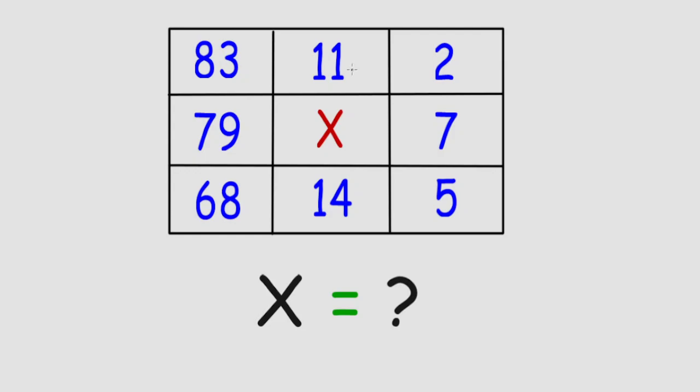But the trick over here is to add each digit. So, 8 plus 3 gives you 11. And 1 plus 1 gives you 2. That's the pattern.